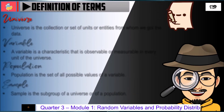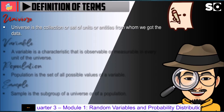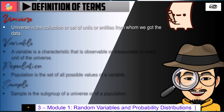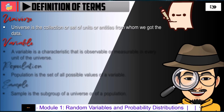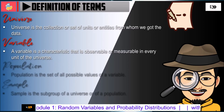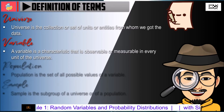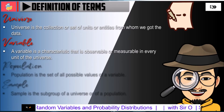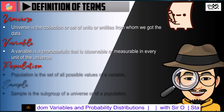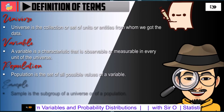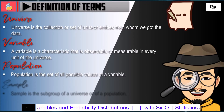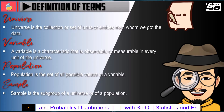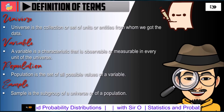Universe is the collection or set of units or entities from whom we get the data. A variable is a characteristic that is observable or measurable in every unit of the universe. Population is the set of all possible values of a variable. Sample is the subgroup of a universe or of a population.